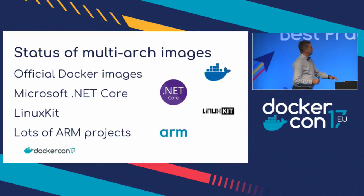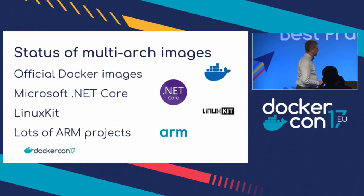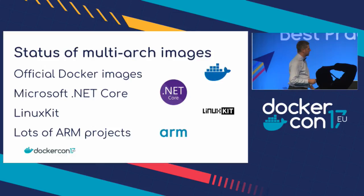Linux Kit has been using multi-arch images for a few months in their repository, giving them the ability to use the same YAML to build Linux Kit against different architectures. And obviously there are a lot of ARM community projects around the Pi and ARM64 that are taking advantage of multi-arch capability today.